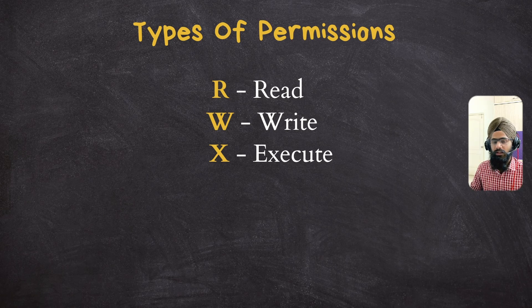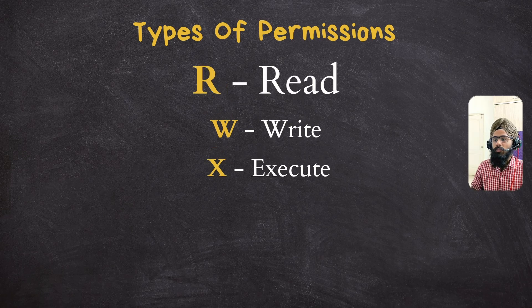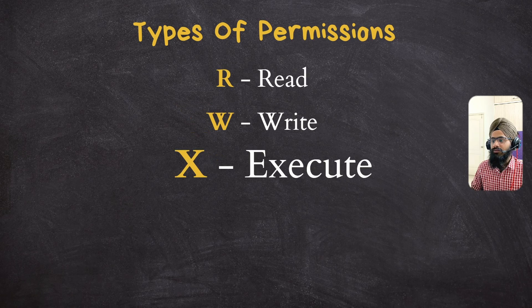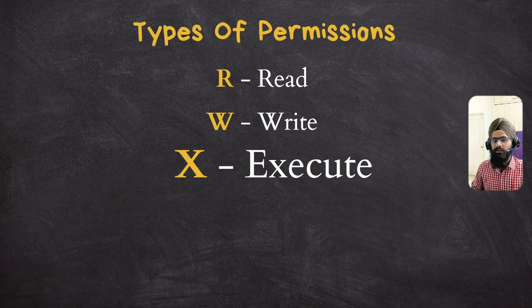We have three types of permissions that you can give to any user: read, which means the user can read the content of the file; write, which means the user can write or edit the content; and executable, which means the user can run the file — basically related to programs and executable files.